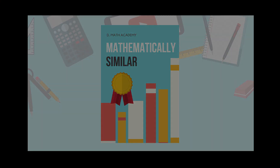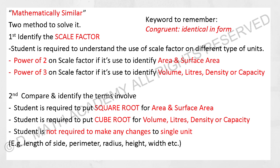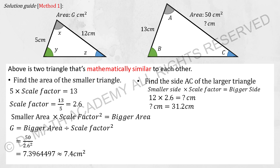The next chapter is mathematically similar. There are actually two ways to solve it: the first one uses scale factor, the other uses square root or cube root, or simply compares values. Both methods need to be learned because different question formats require different methods. Another keyword to remember is 'congruent,' which means identical in form.